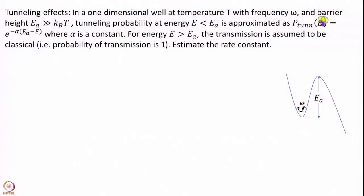We solved this problem several modules ago without any tunneling — you can go back to that module to see how we solved it. Now the question is: can you also include tunneling effects? The probability of tunneling at energy E less than Ea is given by the formula with constant alpha, and for energy greater than or equal to Ea, the transmission is 1. Can you estimate the rate constant? You can make any approximations you want.